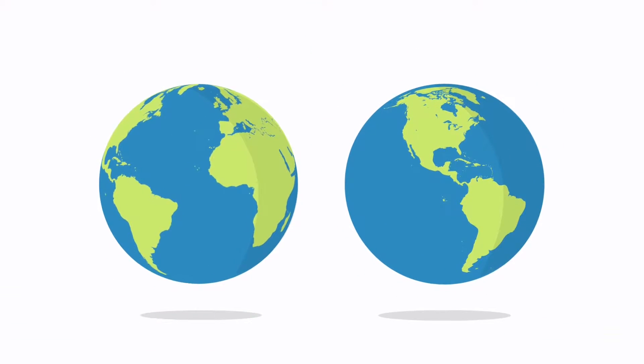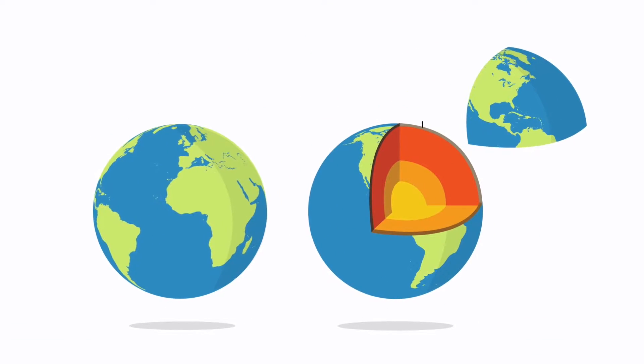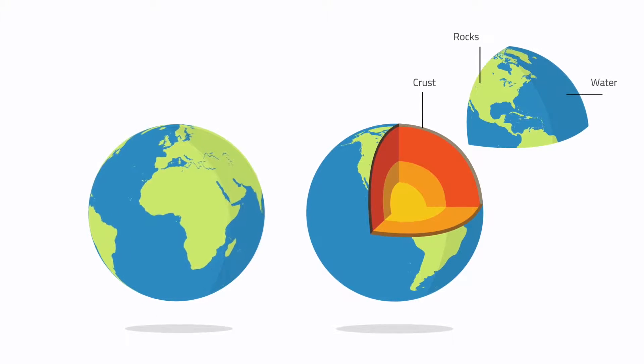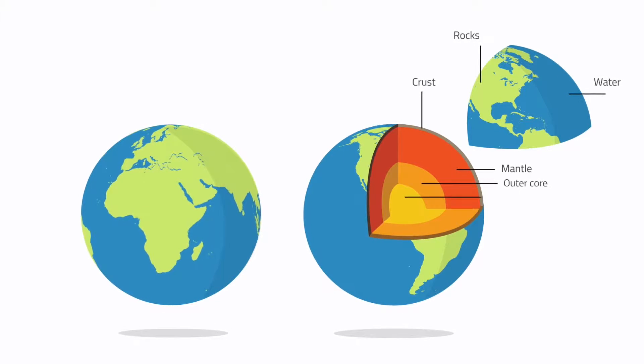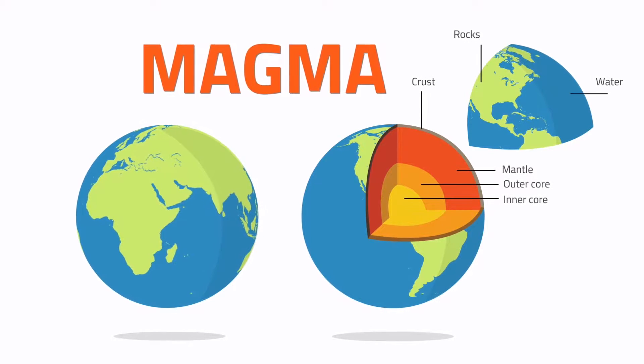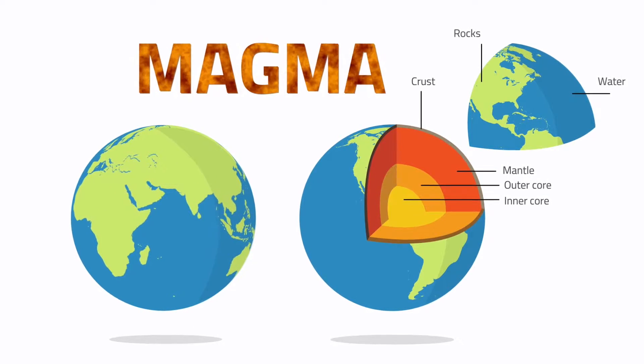The deeper you travel into the Earth, the hotter it gets. The Earth's crust is made of rocks and water. Underneath the Earth's crust is a layer of hot molten rock called magma, which is even hotter than the Sun's surface.